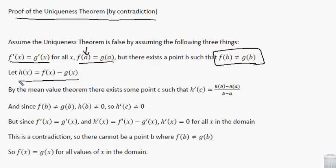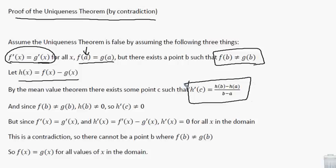In order to do this, we're going to create a new function h, where h is f of x minus g of x. Because f and g are both differentiable, we can also take the derivative of h, and therefore the mean value theorem applies. The mean value theorem gives us this formula: there exists some point c where h prime of c equals h of b minus h of a over b minus a.